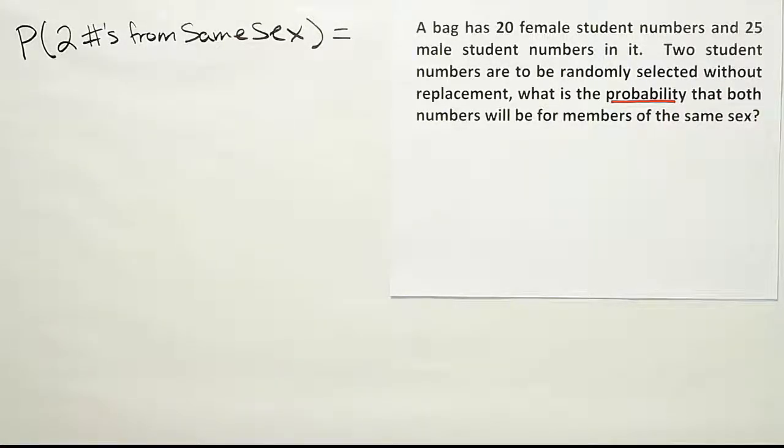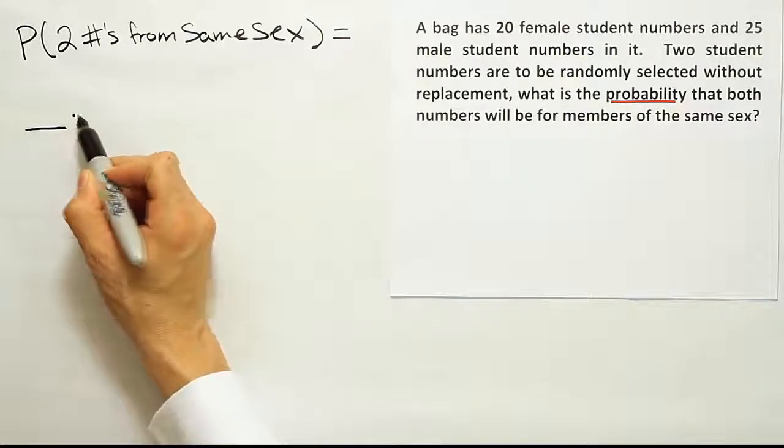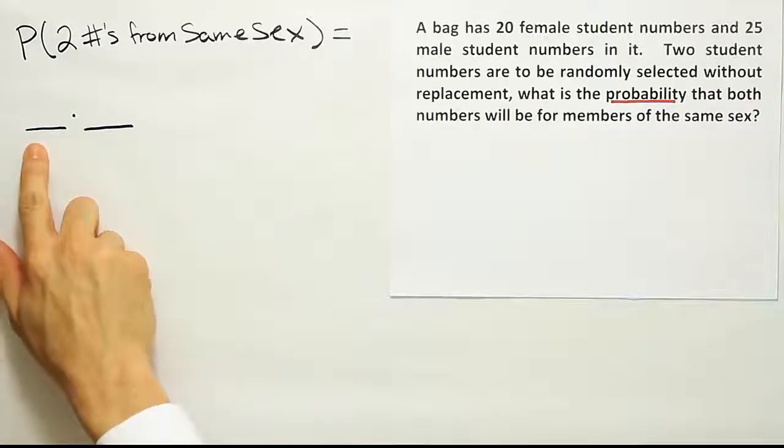And now, at this point, you might come along and say, okay, well I'm selecting two numbers, right? So I should have two spaces to write the corresponding probabilities for each event or each selection, right? Alright, that'd be a logical way to start out, but remember I always recommend that you identify what this first position should stand for before you put any numbers into it.